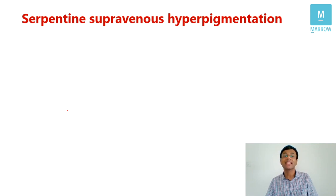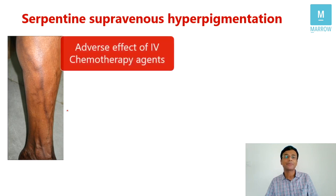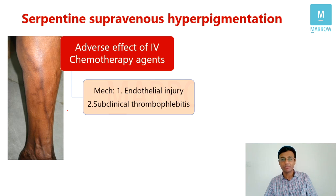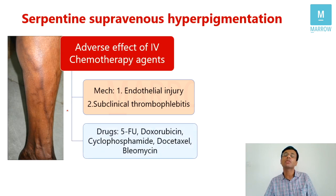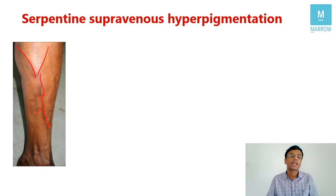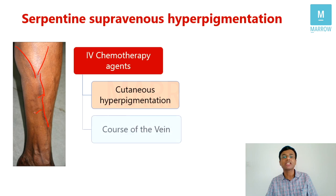Another important cutaneous side effect of chemotherapy drugs to remember is serpentine supravenous hyperpigmentation. This is produced by adverse effects of IV chemotherapy drugs — they damage the endothelium of blood vessels or produce subclinical thrombophlebitis. Important drugs producing this include 5-fluorouracil, doxorubicin, cyclophosphamide, docetaxel, and plicamycin. It presents as a linear streak of hyperpigmentation along the course of the vein.